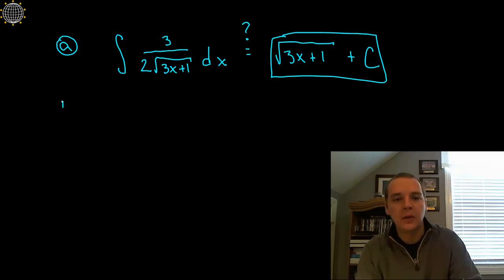So we'll start with a here. Alright, so if we took the derivative, I'll just go ahead and rewrite it as 3x plus 1 to the one half power. That's what a square root is equivalent to.